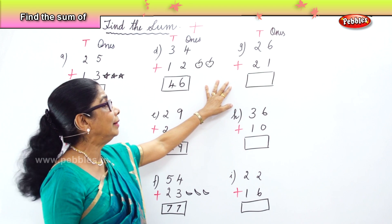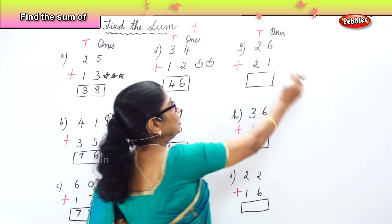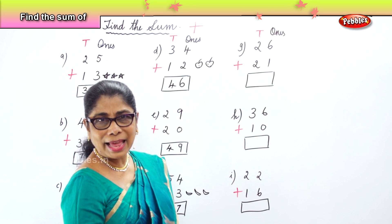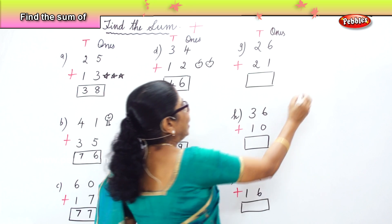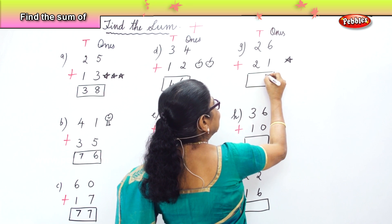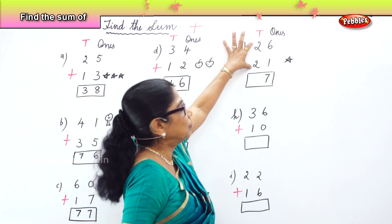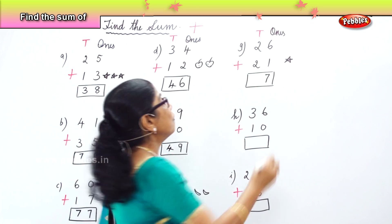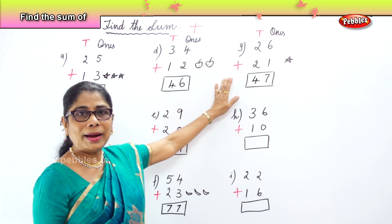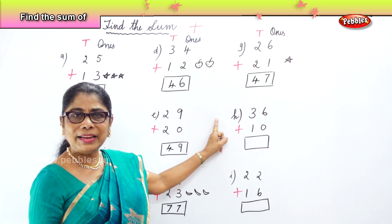Find the sum of twenty-six plus twenty-one. Look at the ones place: six and one. Six and one is seven. Now in the tens: two plus two is four. So the sum of twenty-six and twenty-one is forty-seven.